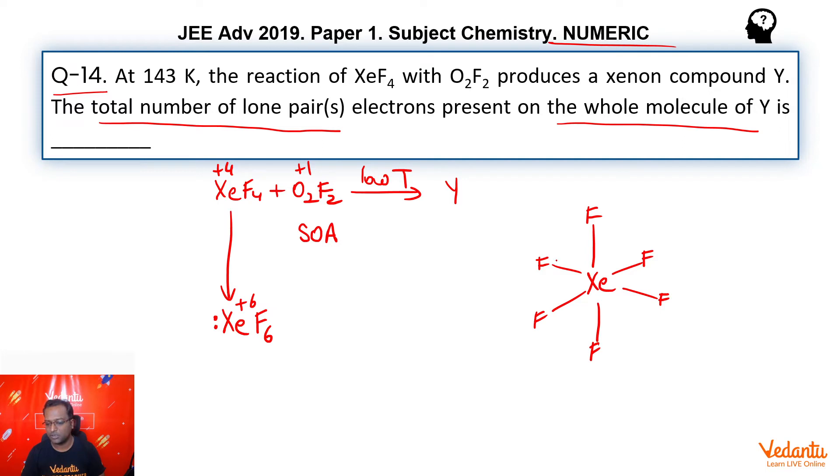We know that the structure of XeF6 is distorted octahedron, right? Like this. The lone pair is present coming out from one of the faces and where it comes out, we see a distortion.